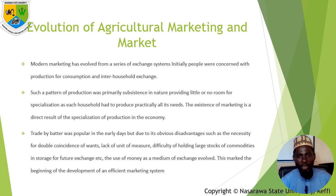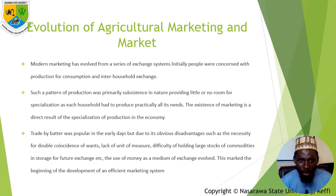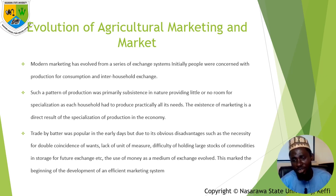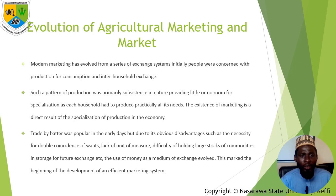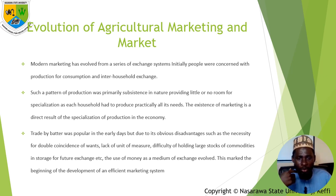Let's look at the evolution of agricultural marketing and markets — how does the market evolve to this modern-day market? Marketing has evolved from a series of exchange systems. Initially, people were only concerned with production for consumption and inter-household exchange — that is, people produced what they ate and sometimes exchanged food just to increase satisfaction. But that alone did not create any form of specialization as we have today. Such a pattern of production was primarily subsistence in nature, providing little or no room for specialization, as each household produced practically all its needs. So the existence of marketing is a direct result of specialization of production in the economy.